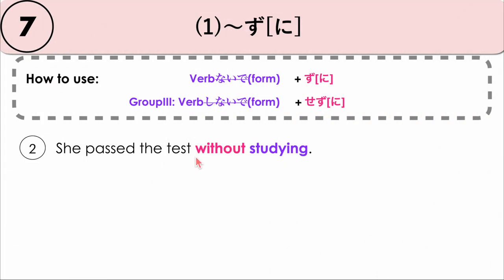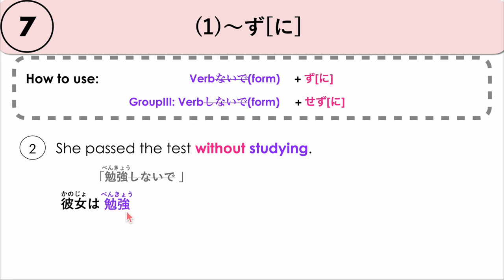She passed the test without studying. Kanojo wa — our verb is to study, or not to study — benkyo shinaide, without studying. We remove shinaide. Benkyo is group three, so if it's group three, we use sezu ni. Benkyo sezu ni. Goukaku shimashita. Kanojo wa benkyo sezu ni goukaku shimashita.